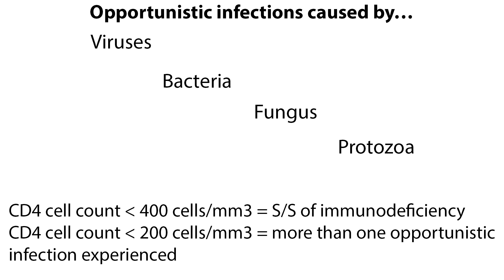As CD4 cell counts fall below 400 cells per cubic millimeter, signs and symptoms of immunodeficiency occur. And when CD4 counts fall below 200 per cubic millimeter, more than one opportunistic infection is experienced.